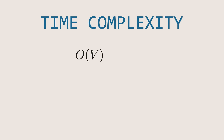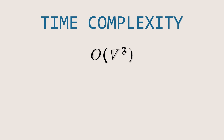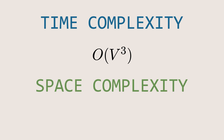The algorithm loops over each node once and traverses the whole matrix for each node. So the time complexity is O(V³), where V is the number of nodes. The space complexity is O(V²), as we use matrices to store the shortest paths and predecessor information.